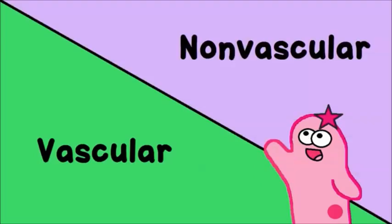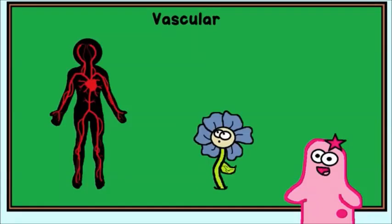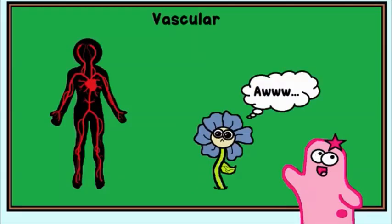Recall that in the human body, your vascular system includes arteries and veins. Well, plants don't have arteries or blood, for that matter.